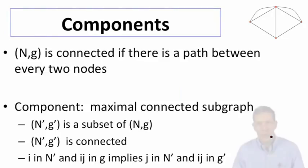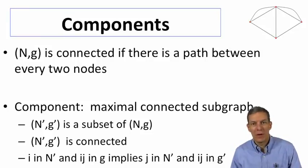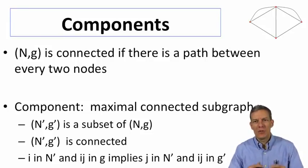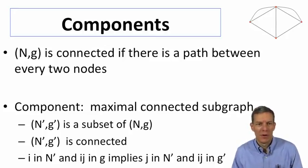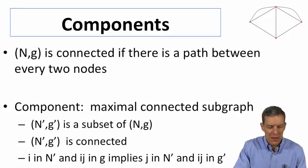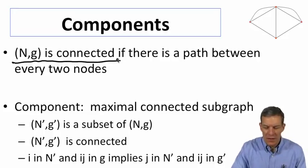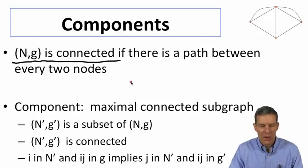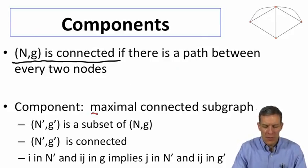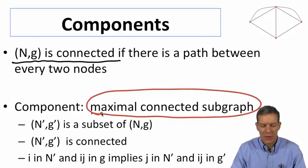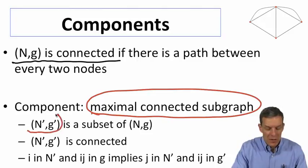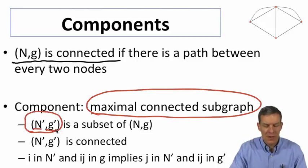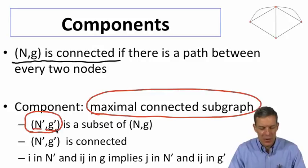Another thing that's going to be very important to keep track of in a network is its component structure. What are the components? These are the connected subgraphs that make up a network. We'll say that a network NG is connected if there's a path between every two nodes. A component of a network is going to be a maximally connected subgraph, a subset of nodes and a subset of the links in the network so that we have those being corresponding subsets of the original nodes and original set of links.